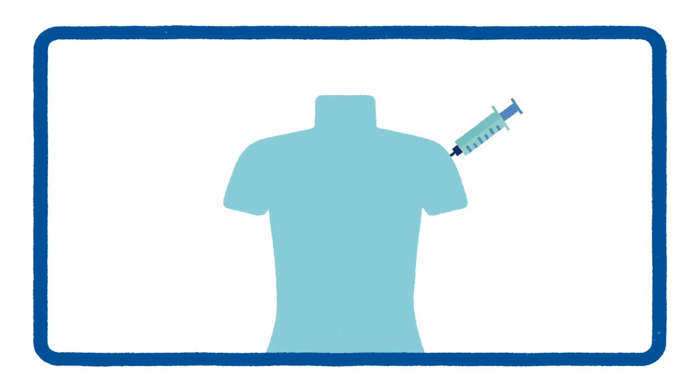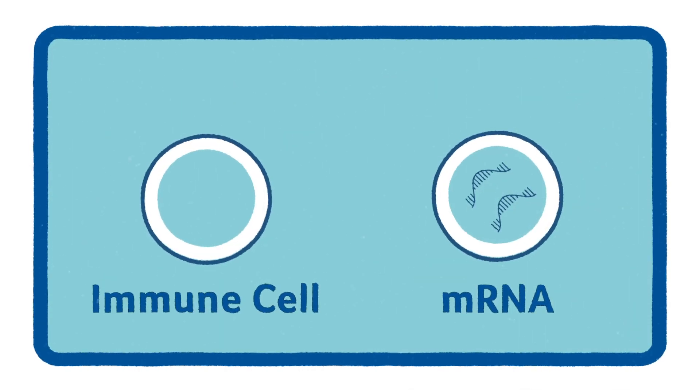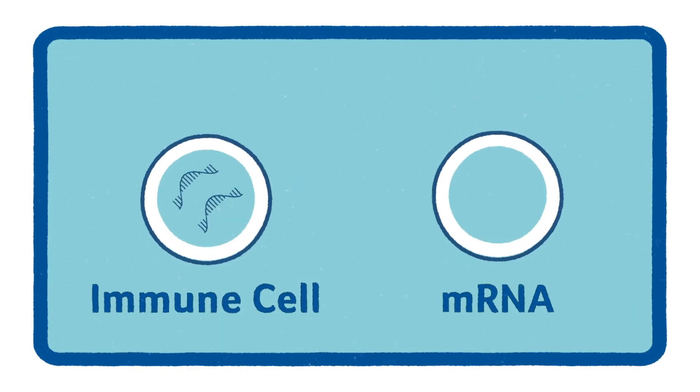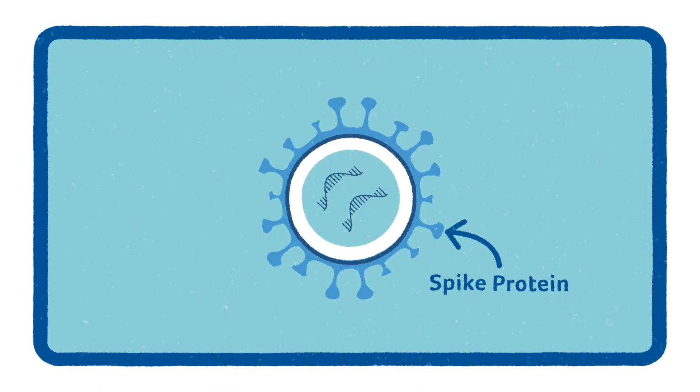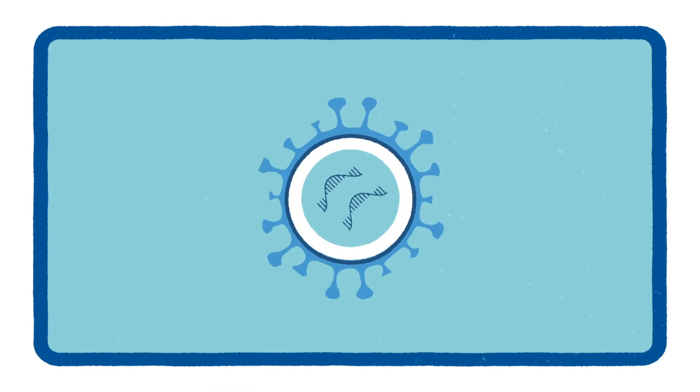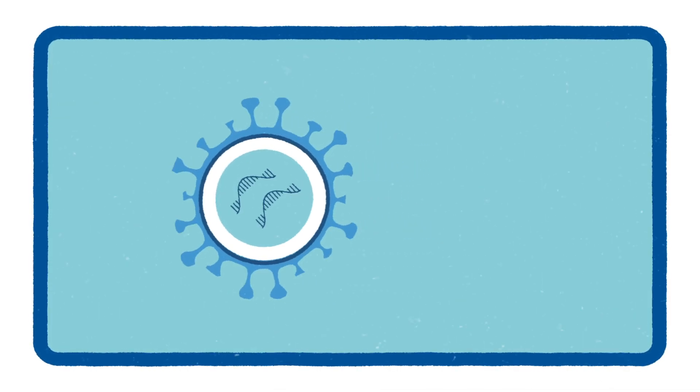Once the vaccine is injected into the muscle, immune cells will take up the mRNA blueprint and begin building a specific COVID-19 viral protein called the spike protein. These spike proteins recruit other parts of the immune system to generate a strong immune response.